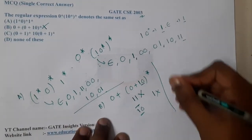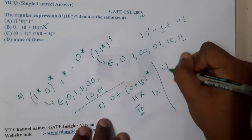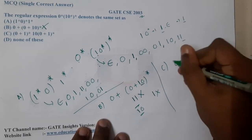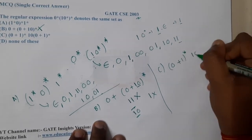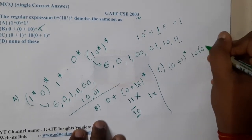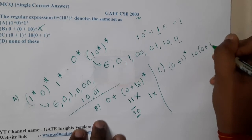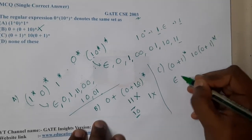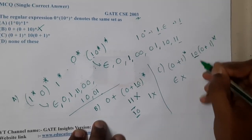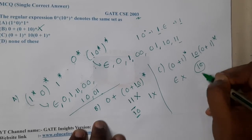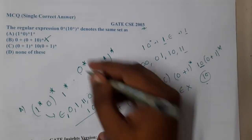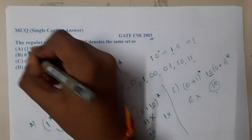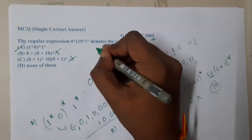Moving on to option C: (0+1)*(10)(0+1)*. Can we generate epsilon here? No, because the substring one-zero is one hundred percent mandatory. So option C is also wrong.